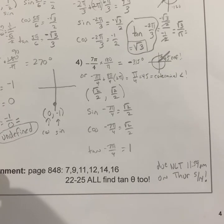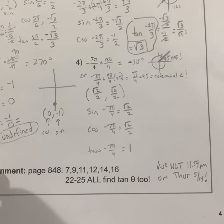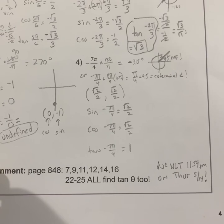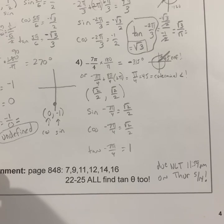The assignment for this lesson is from your textbook, page 848 — a copy is provided if you don't have your textbook. Problems 7, 9, 11, 12, 14, 16, and then 22 through 25 all. In problems 22 through 25, they ask for sine and cosine, but I'd like you to find the tangent too. This assignment is not due today; it's due no later than 11:59 p.m. tomorrow, Thursday, May 14th. Have a great day.